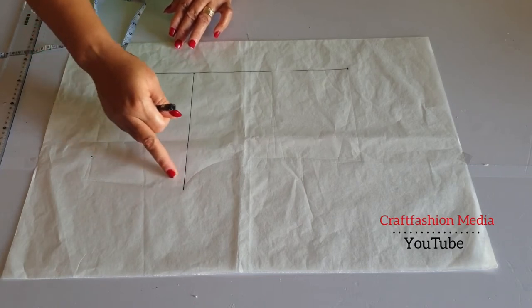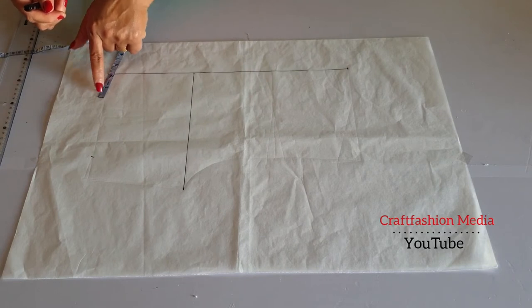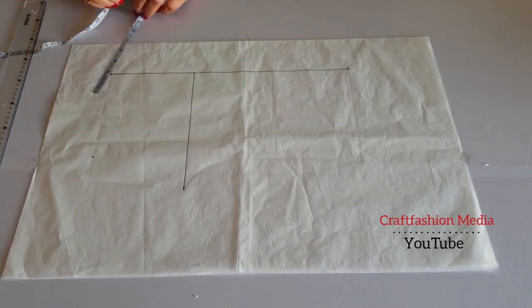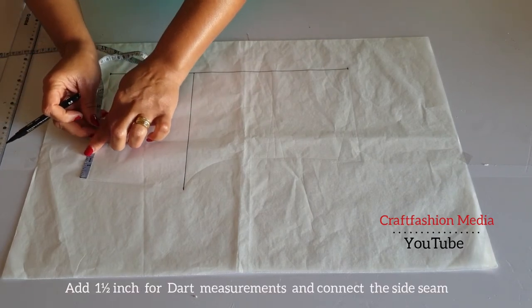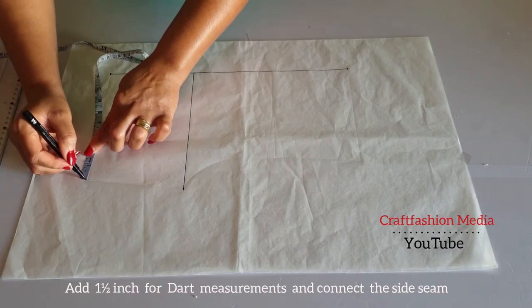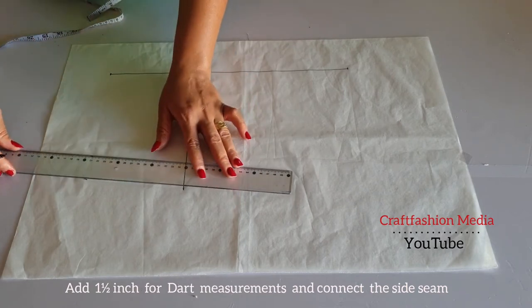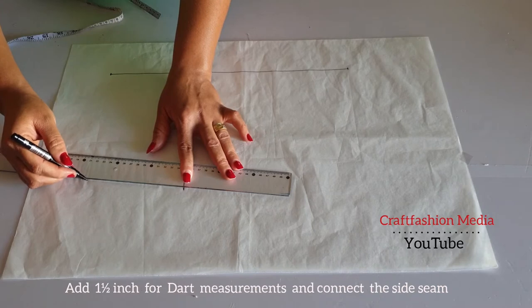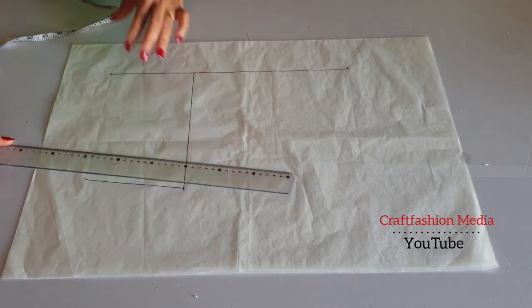So looking at the waist measurement, if I should connect this line to my bust measurement, you will see the slant is so deep. So what I'm going to do is to add one and a half inch for my dart. And I will connect my side seam.